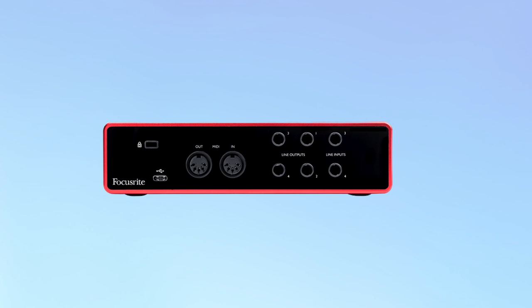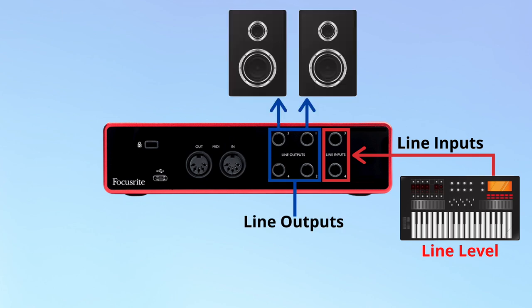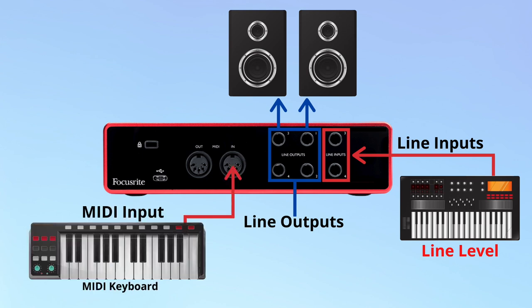On the back there are some dedicated line inputs for line level instruments. Next there are some line outputs — these are used to connect studio speakers, also known as studio monitors, but they can also be used for external hardware, which I will cover later. Next there is a MIDI input for connecting a MIDI instrument like a keyboard.